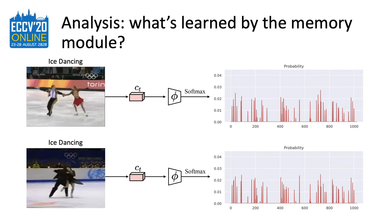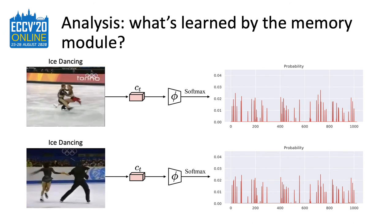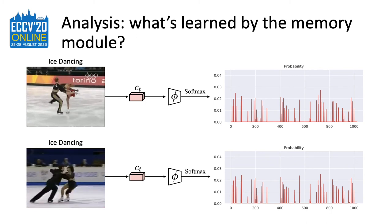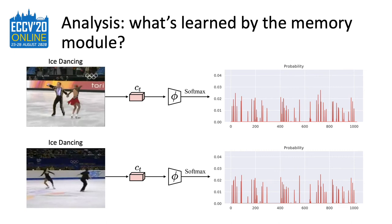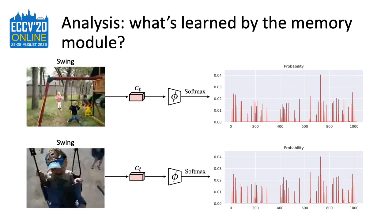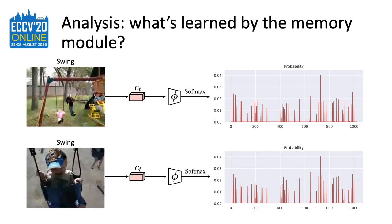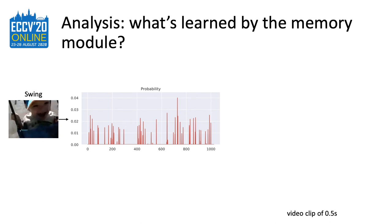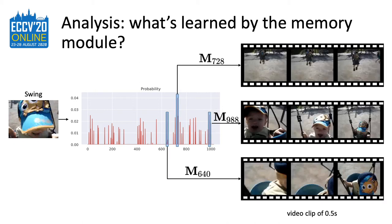Here, we visualize the probability distribution that the model uses to select memory slots. For the same action, the model learns to produce similar distributions. For another action, the probability has a different pattern. Note that all of these are learned without using any labels. Our model uses the probability distribution to choose memory slots. Following the last example, we choose the three peaks in the probability distribution, find their corresponding memory slots, and use each memory slot to find the nearest neighbor from the input video. The result shows the chosen memory slots match with different states of the swing action.